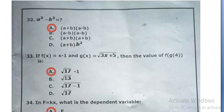A square minus B square is equal to A plus B into A minus B, option A.